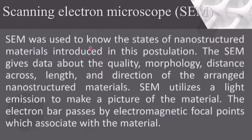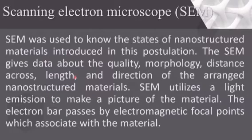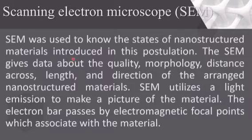The electron beam passes through electromagnetic lenses and interacts with the material. The interaction of the electron beam does not destroy the material. The detector picks up secondary electrons emitted from the material, converts them into a signal, which is then displayed on the screen. SEM measures images in the range of a few nanometers.